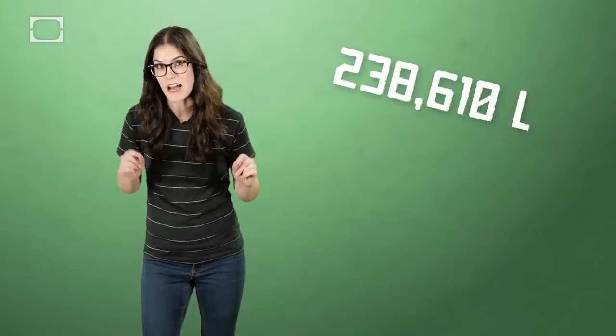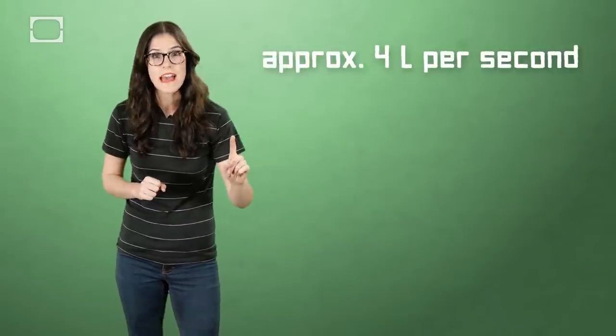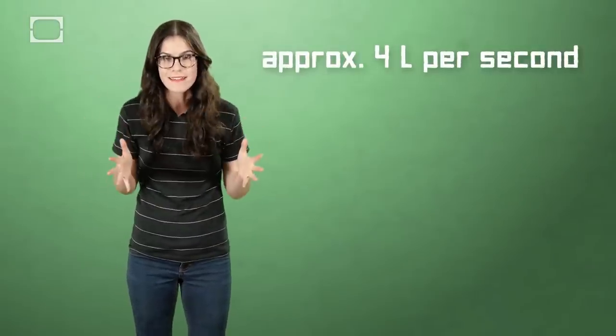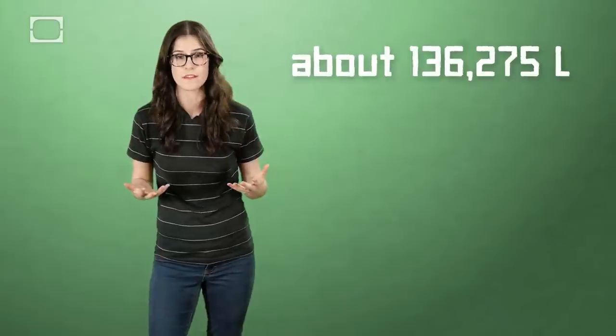A plane like the 747-8 can carry around 63,034 gallons of fuel, giving it the ability to make extremely long flights. So, flying from, say, LA to Australia is no problem, as long as it's gassed up. However, the plane uses approximately one gallon of fuel every second. And, this means that over the course of a 10-hour flight, it might burn 36,000 gallons of fuel.